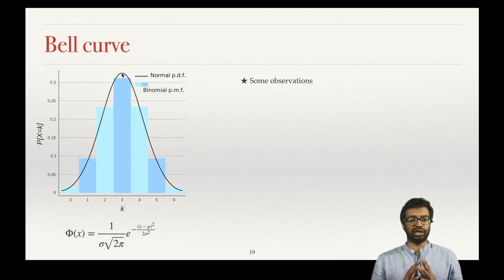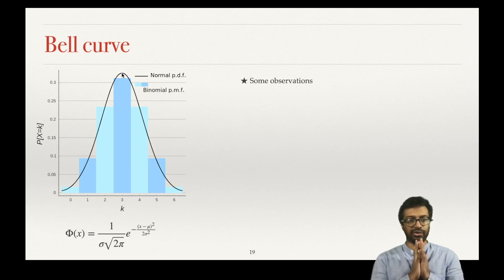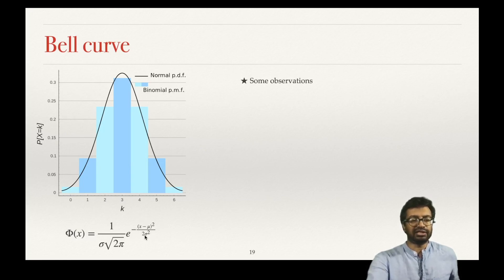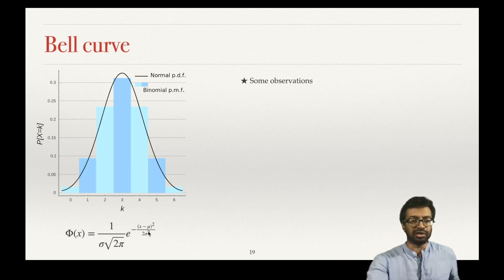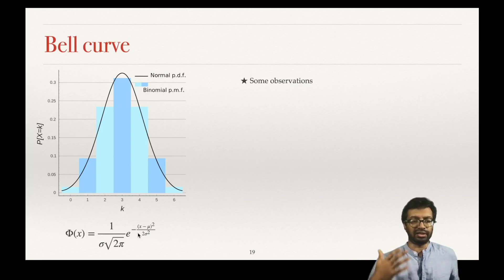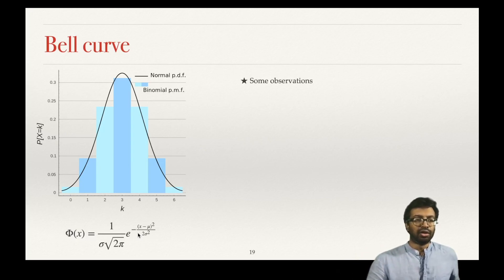Now the question one should ask is: what happens if sigma is bigger — does it become wider or narrower? When sigma gets larger, the bell curve becomes wider, so the width increases as variance increases. One more property: since this is a probability distribution, the area under this curve must equal 1. The constant 1 over root 2 pi has been set up exactly to ensure that the area under this curve is 1.